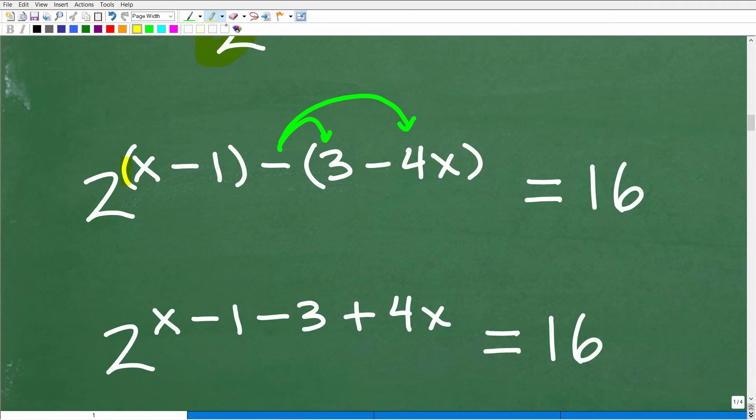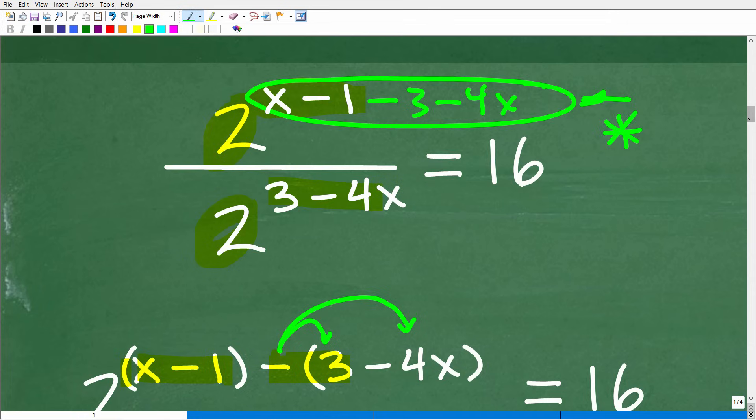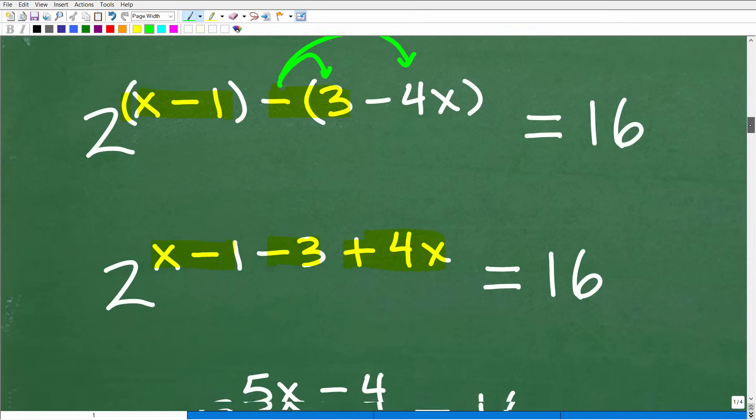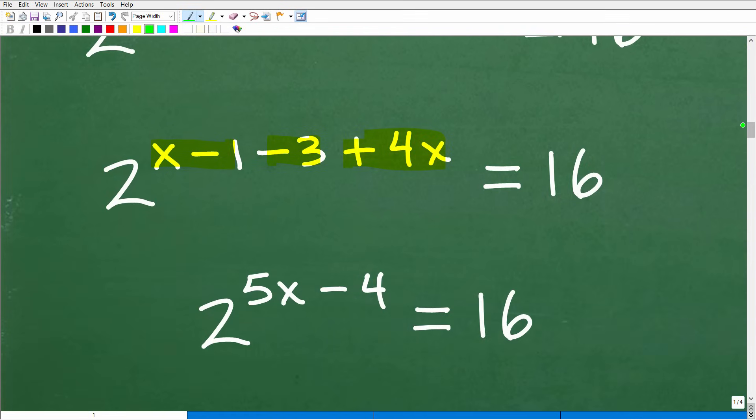So the resulting expression is going to be two to the x minus one. This is going to be minus three and then minus times minus or negative times negative is positive. Positive four x. If you didn't have parentheses, you would still have that minus four x there. And of course, it would cause you to have the wrong answer.